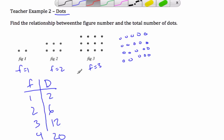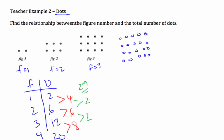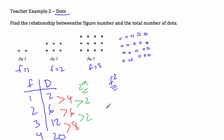Now if we go and look at our first differences like we did before — that's four, then six. They're not the same. But if I go one more difference to what we call second difference, this is two and two as well. The second difference means it's not going to be a linear situation like the last ones were, but it's going to be an f squared type situation. If the first difference is the same, it's linear. If the second difference is the same, it's quadratic — so it's going to have an f squared somewhere.